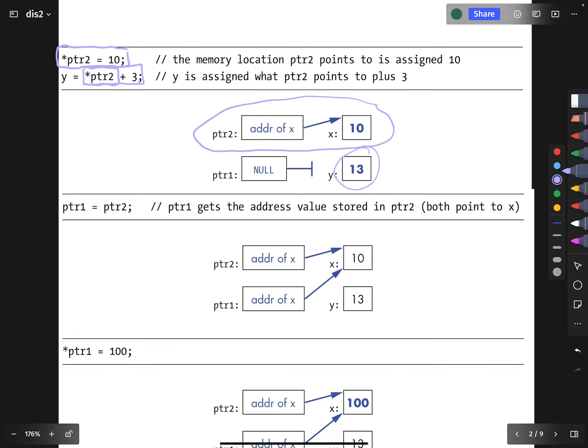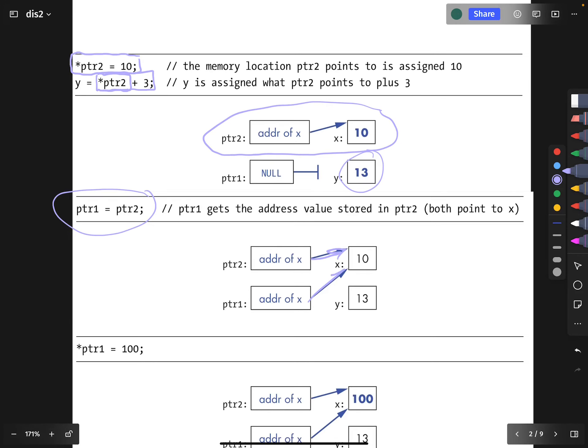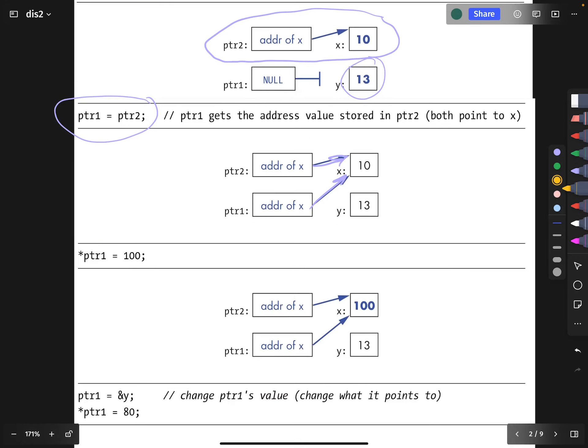What happens next? We dereference pointer two, meaning that we follow it to its location in memory. And what that should at this moment do is get the number 10. So here we are getting the number 10, adding three to it. So y now stores the value 13. So that's why that's in the diagram. Now we take pointer two's address and we put that address into pointer one. So now they have the same address.